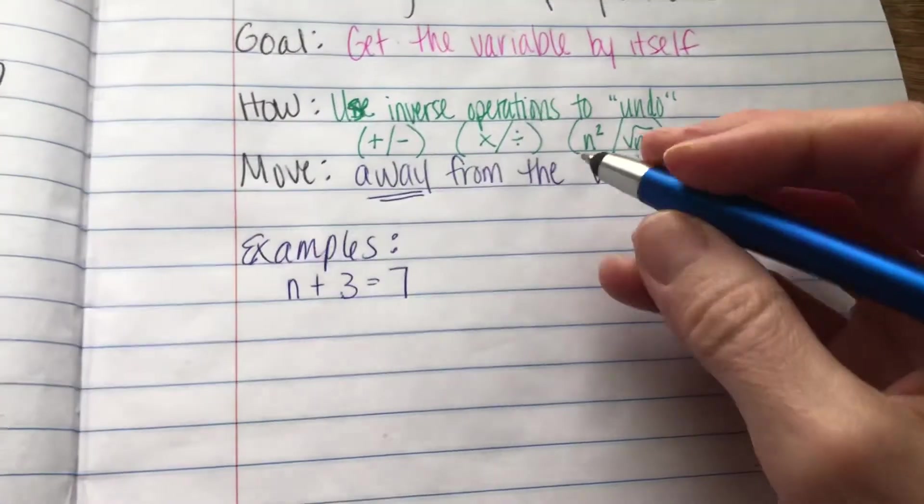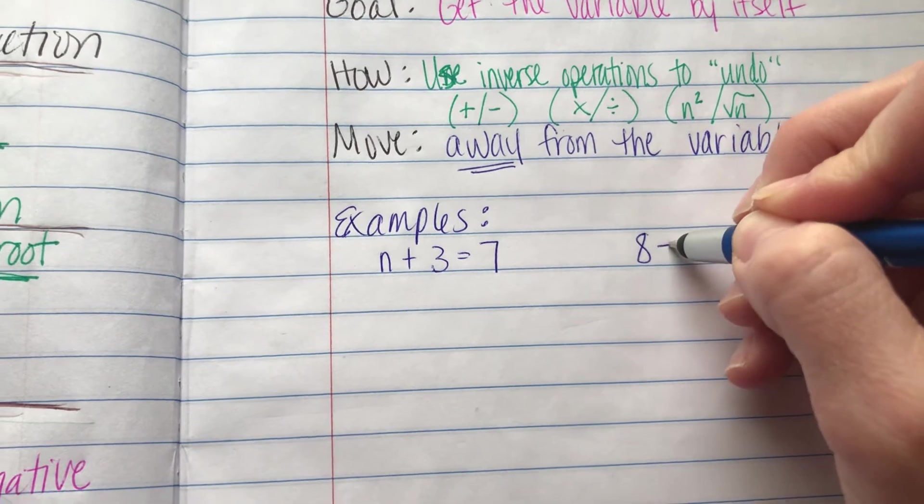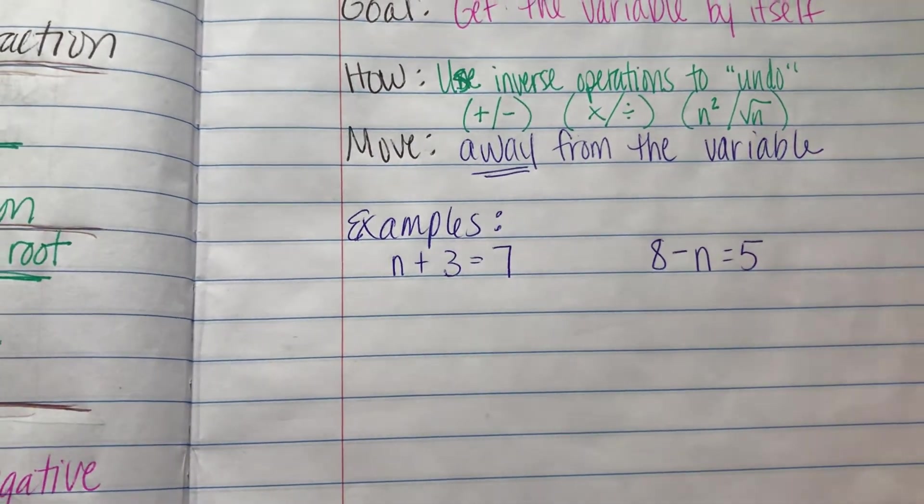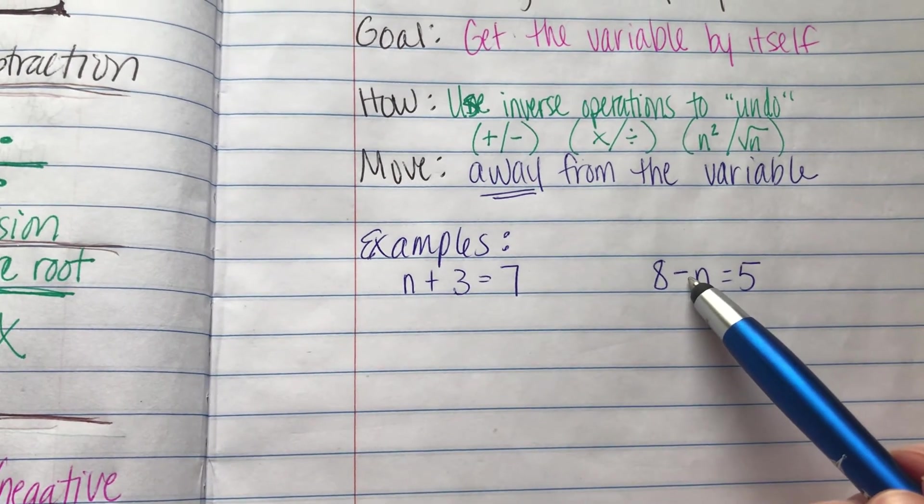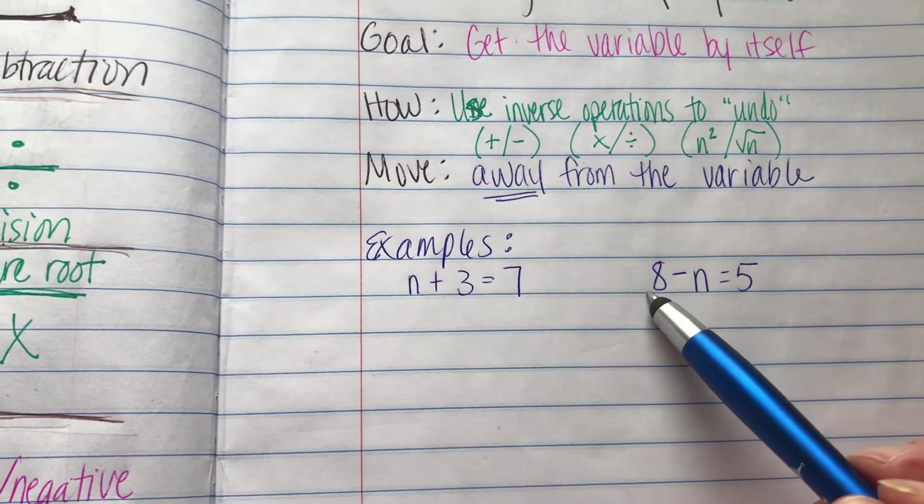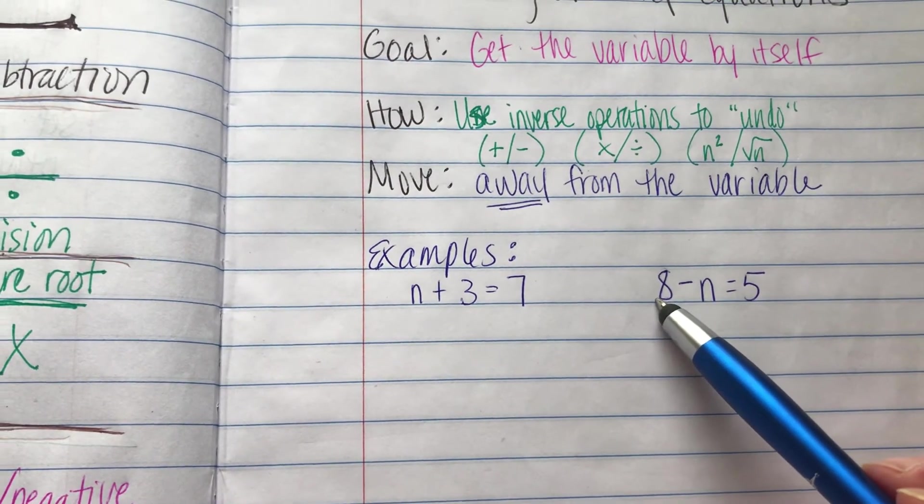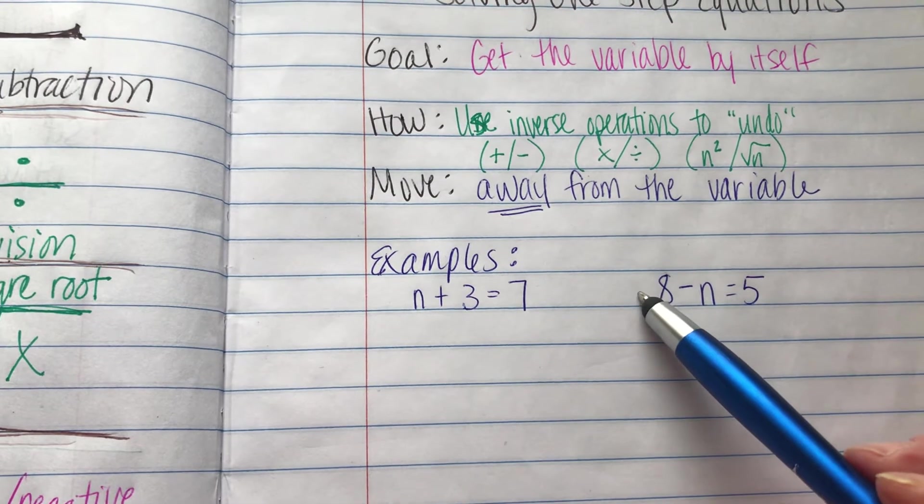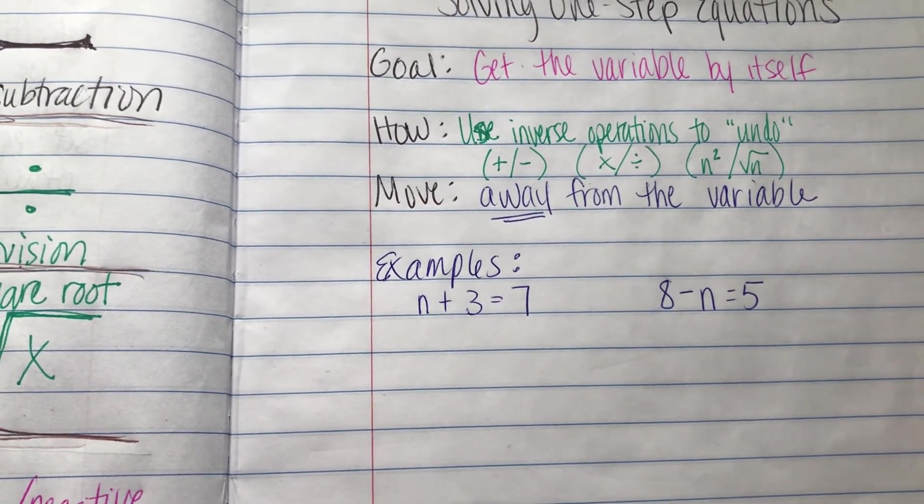Another example that we will also do in this video is 8 minus n equals 5. And that might seem weird because that's a subtraction sign, but this is an addition that we're undoing. This is a positive number here because there's no sign in front of it. So we're going to solve these the same way, even though they look like different kinds of problems.